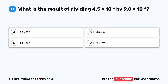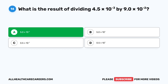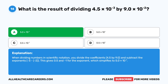Question fourteen: What is the result of dividing 4.5 times 10 to the power of negative 3 by 9.0 times 10 to the power of negative 2? A, 5.0 times 10 to the power of negative 1. B, 5.0 times 10 to the power of 1. C, 0.5 times 10 to the power of negative 1. D, 0.5 times 10 to the power of 1. The correct answer is A, 5.0 times 10 to the power of negative 1. Divide the coefficients (4.5 by 9.0) and subtract the exponents (negative 3 minus negative 2), giving 0.5 and exponent negative 1, which simplifies to 5.0 times 10 to the power of negative 1.